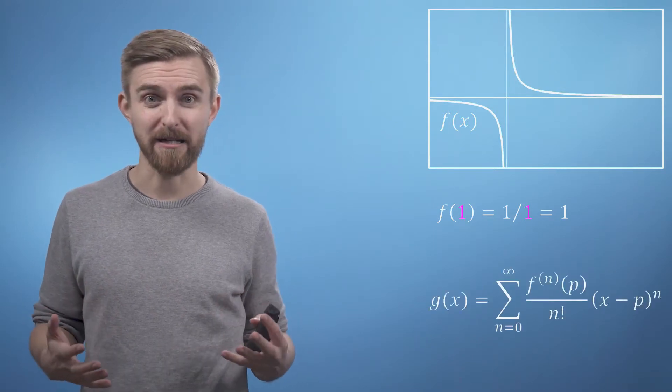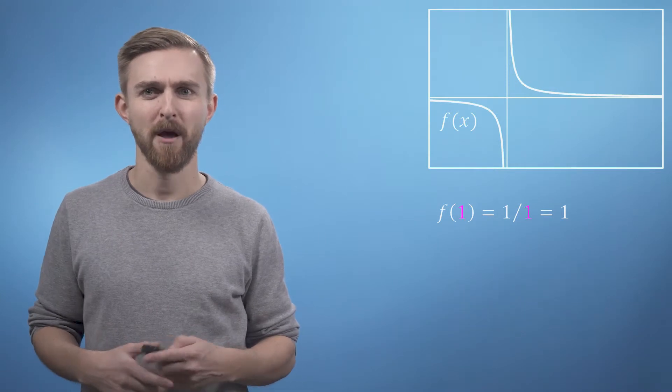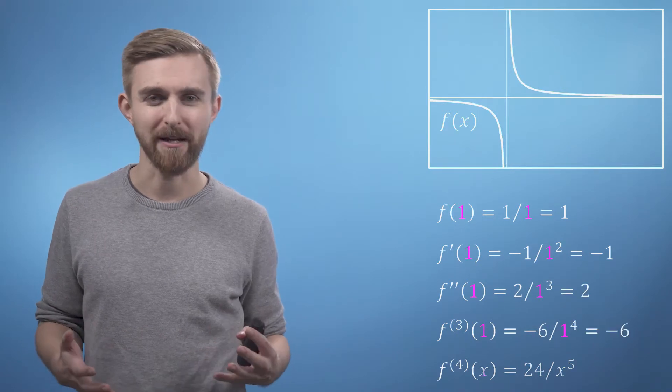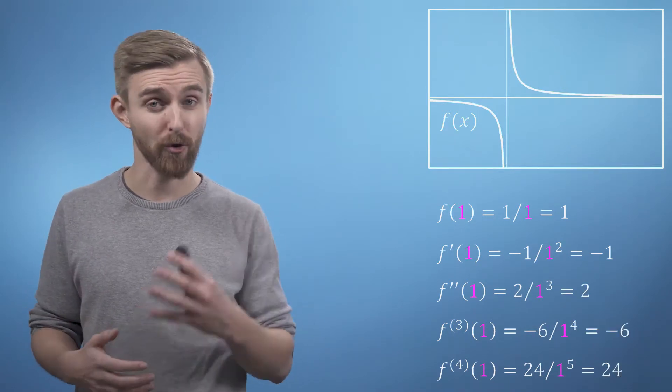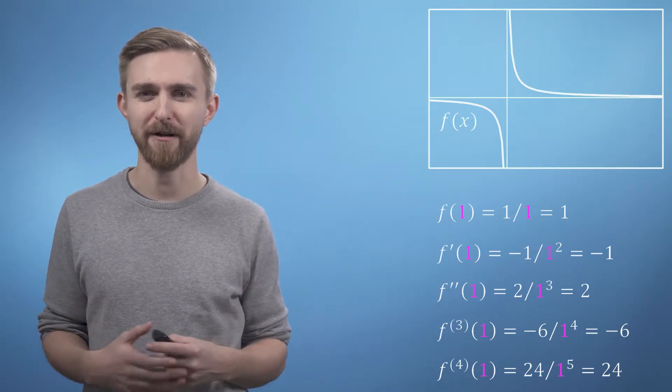So we now need to find a few derivatives of the function and see if we can spot a pattern. When we evaluate these functions at the point x equals 1 hopefully you'll recognize that we get a sequence of factorials emerging just as we did when deriving the power series formula in the first place.